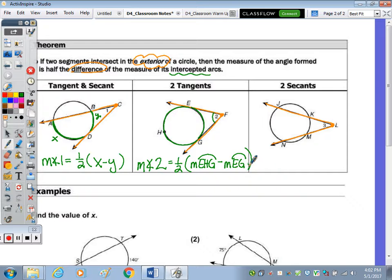And then since we're not looking at the whole circle here, I'm going to call this arc X, this arc Y. So the measure of angle 3 equals one half of X minus Y.